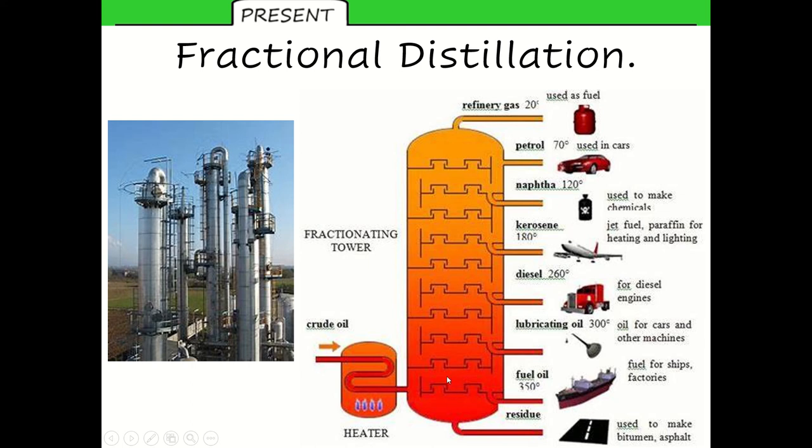So as the gases rise up the column, hot at the bottom, cold at the top, they begin to cool down. And they will then condense when they reach their particular boiling point. So just a reminder that condense means that they will turn back into a liquid. When they turn back into a liquid, those droplets collect and then can be removed from the fractionating tower here on this right-hand side.